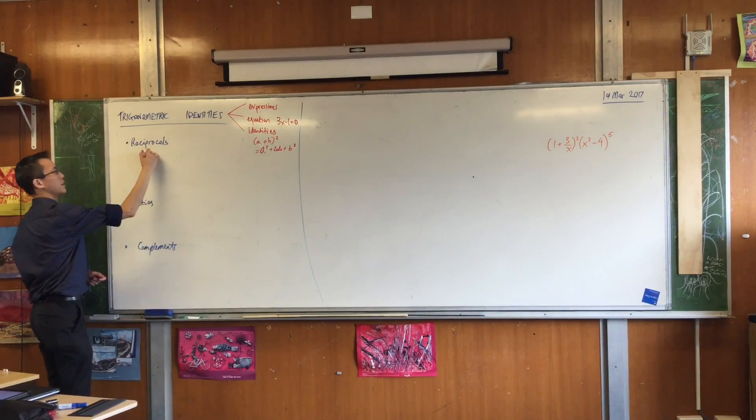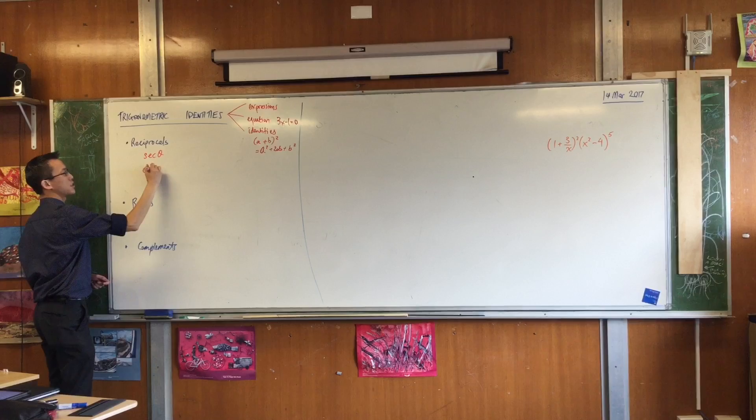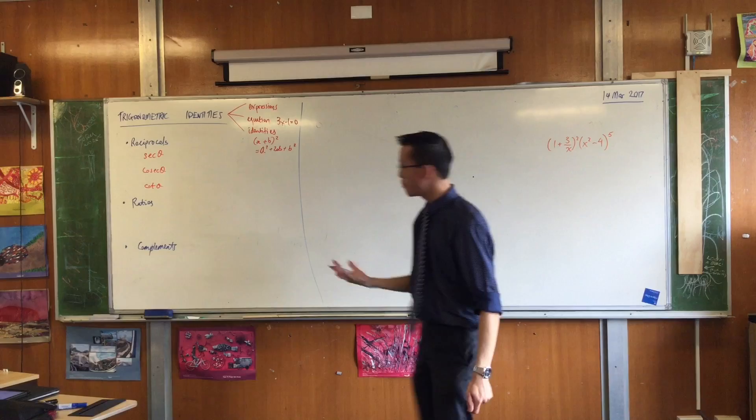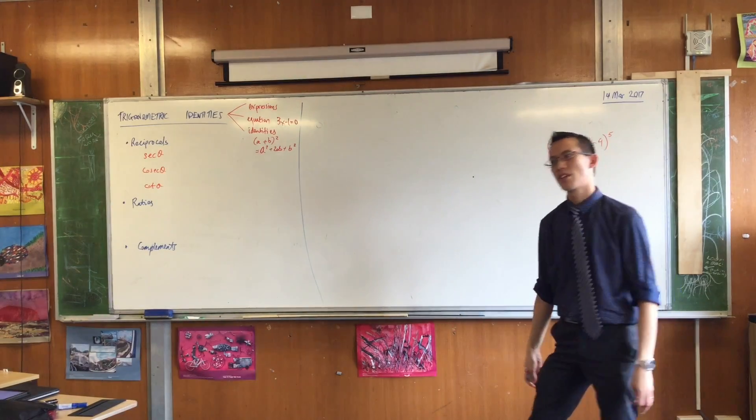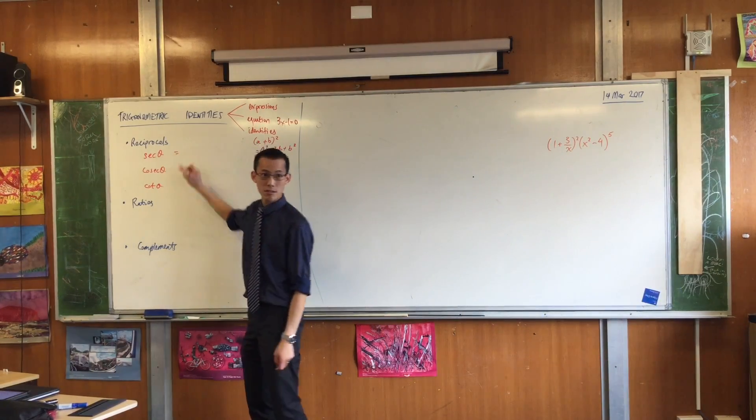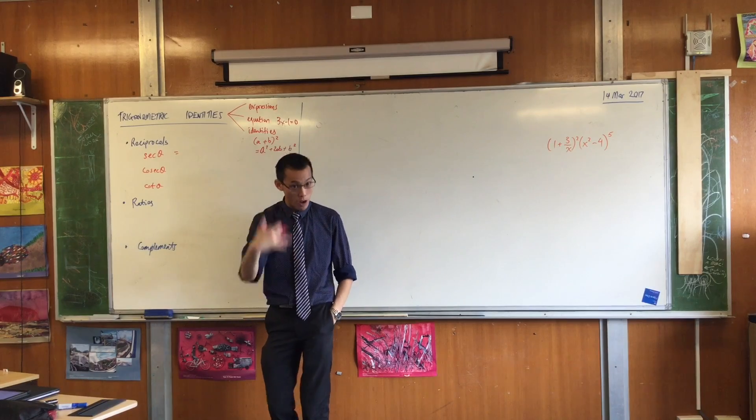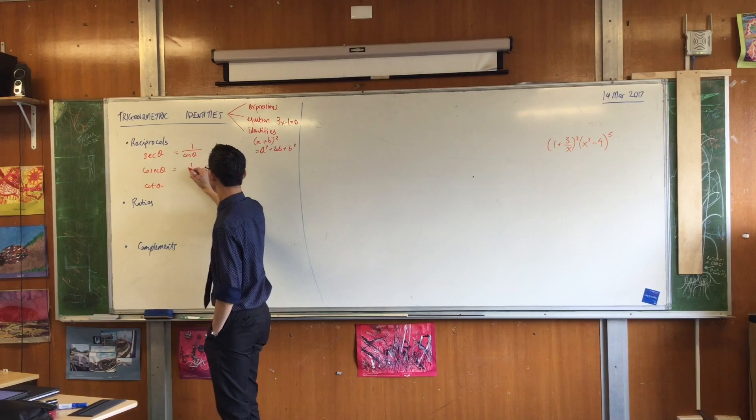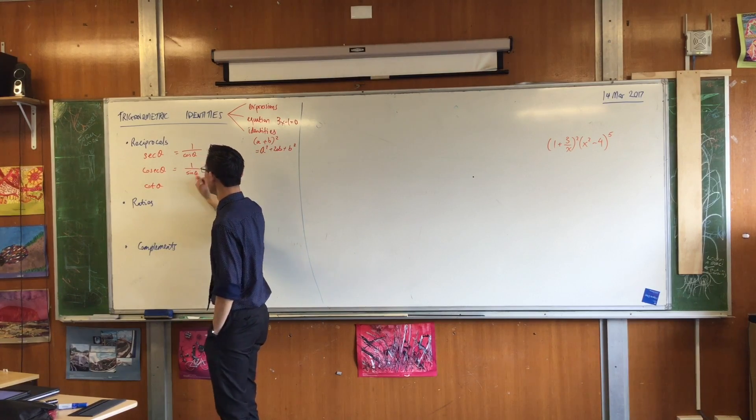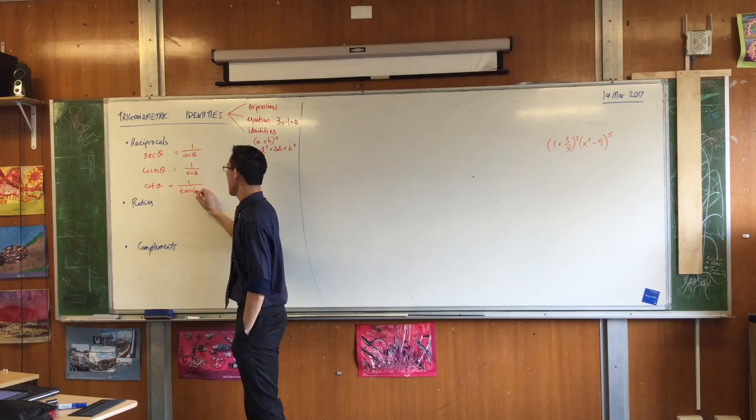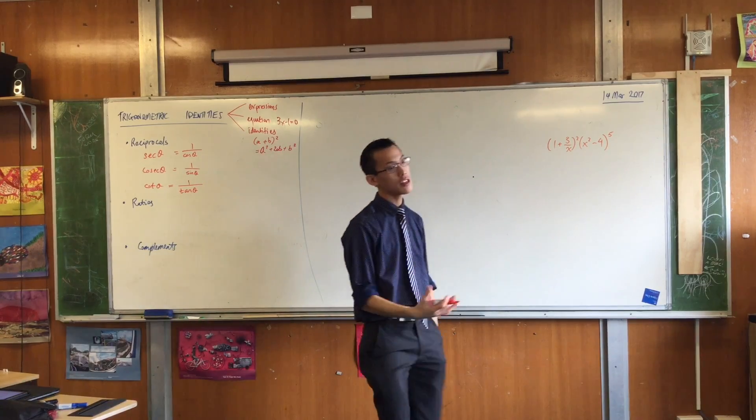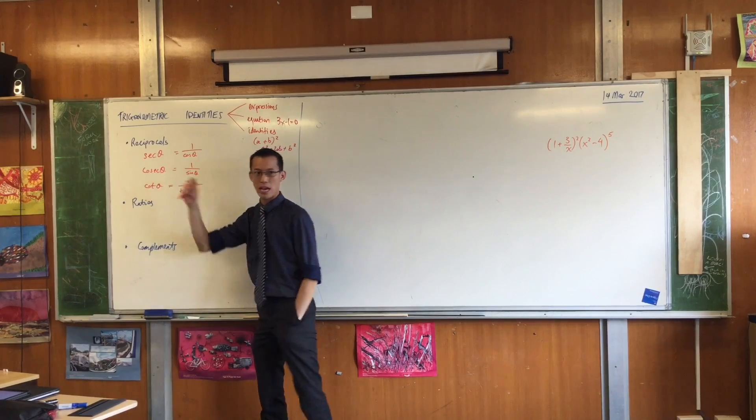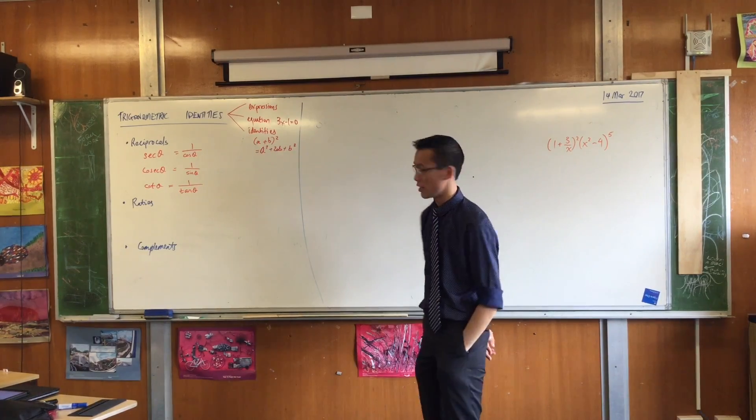So we have sec, cosec, and cot. Each of them is a reciprocal of another one of the functions that you're a little more familiar with. Which one's which? Sec? That's one over cos. Cosec? One over sin. And that leaves one over tan for cot. So we've seen these before. And the whole point is, we define them in this way. These are always true. They are always equal to each other, no matter what value of theta you find.